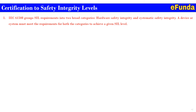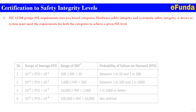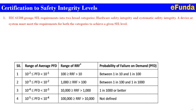Certification to Safety Integrity Level: IEC 61508 groups SIL requirements into two broad categories — hardware safety integrity and systematic safety integrity. A device or system must meet the requirements of both categories to achieve a given SIL level as required by the operation team. One can refer to the table where SIL ratings SIL 1, SIL 2, SIL 3, and SIL 4 are defined along with the range of average PFD values and risk reduction factors.